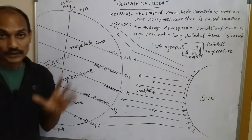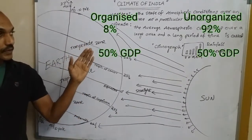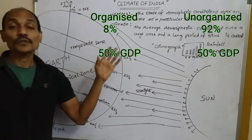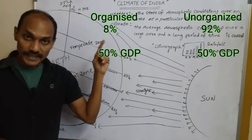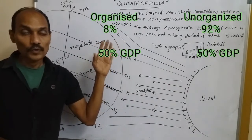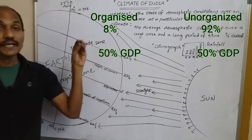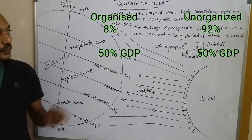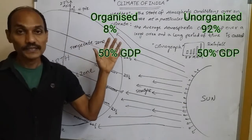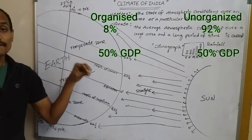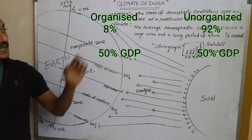We also discussed organized and unorganized sectors. In the organized sector, eight percent of the people are working, and in the unorganized sector, 92 percent of the people are working. Even though the unorganized sector has 92 percent of workers, its contribution is 50 percent in GDP growth.